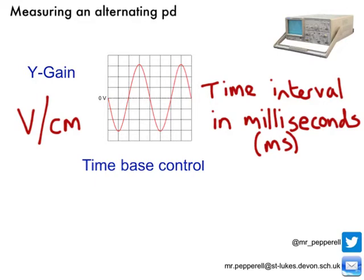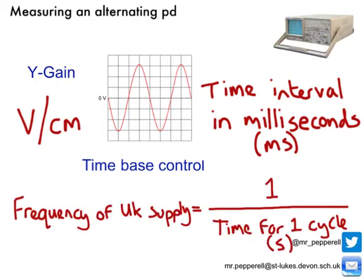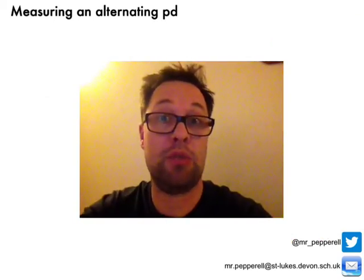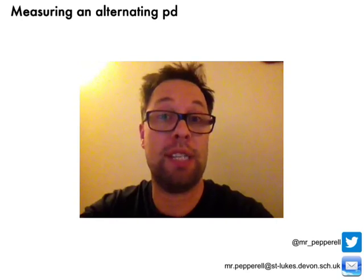Well, I just do it using that little calculation there. The frequency of my main supply is equal to one divided by the time for each cycle to take place. So, that is how we can use an oscilloscope trace to investigate an alternating current.